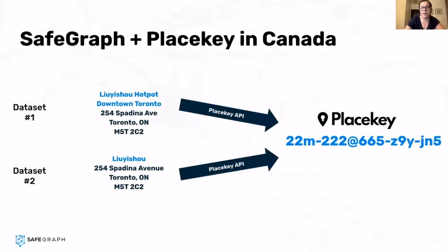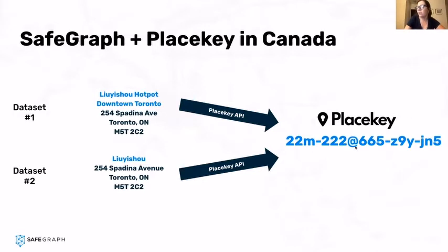SafeGraph is a founding member of the PlaceKey initiative. PlaceKey is the universal standard identifier for a place, and PlaceKeys are now available for Canada — they launched in Canada back in March. Here you can see an example of two addresses for actually the same physical place in Toronto, formatted differently, which would make it really hard to join data to those locations and identify that they are the same actual place. Using the PlaceKey API, you can append a standard identifier for that place so that you can easily join other datasets to just that one location, avoid duplicate records, and understand that it is indeed the same place.